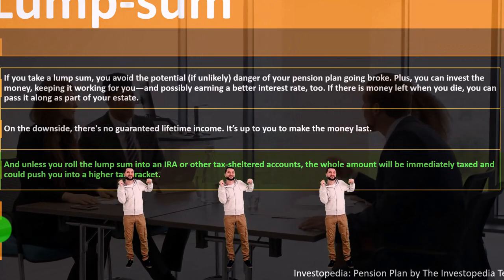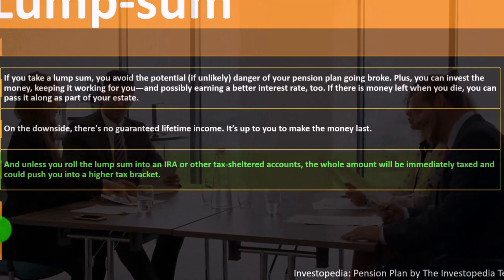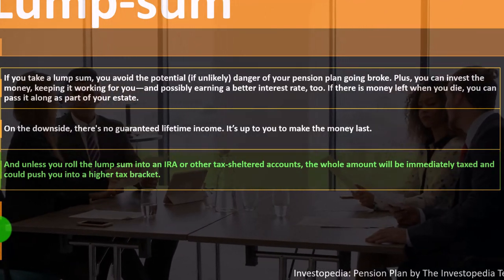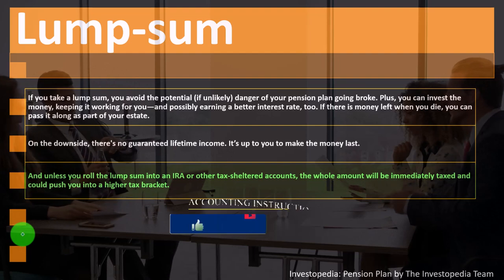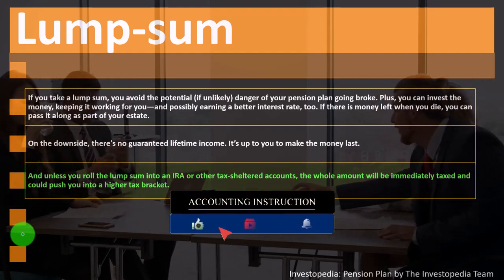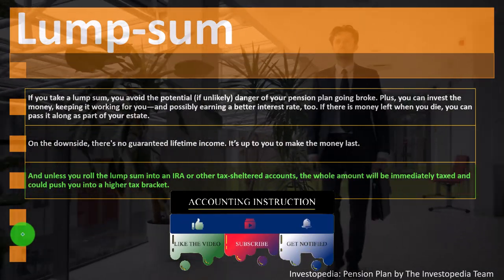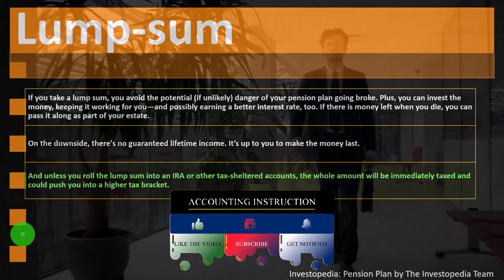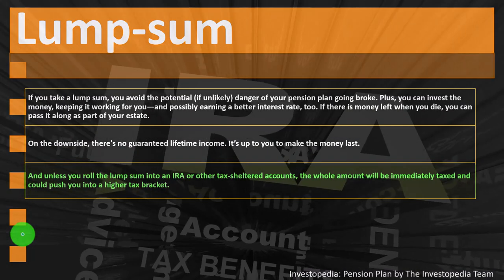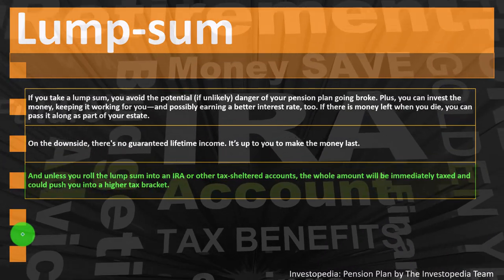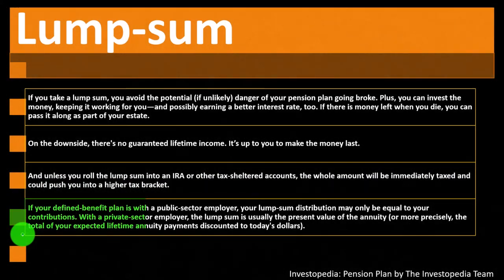Unless you roll the lump sum into an IRA or other tax-sheltered account, the whole amount will be immediately taxed and could push you into a higher tax bracket. With a progressive tax bracket, recording all income in one year subjects you to a higher rate than if received gradually over multiple years. Tax planning strategies aim to keep annual taxable income lower — for example, using a Roth IRA so you can maintain a good standard of living with lower year-by-year taxable income.